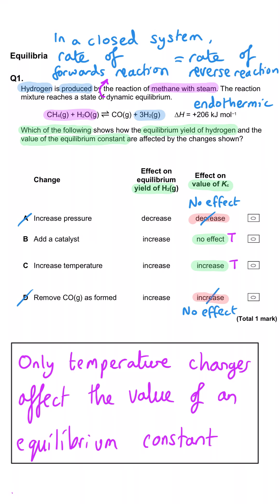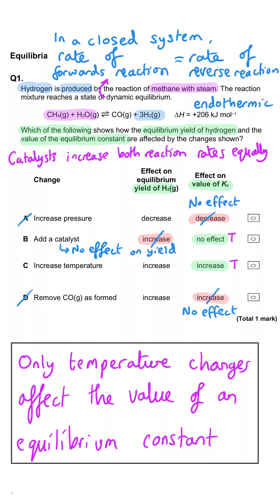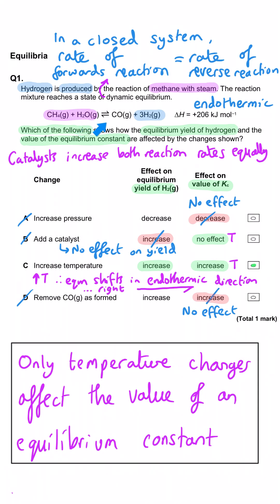So we're now deciding between B and C. If we look at the yield, B says adding a catalyst will increase the yield of hydrogen — that's not true. It will increase the rate of the forward reaction, but it will also increase the rate of the reverse reaction, so those effects cancel out and the yield won't change. So B must be wrong and C must be correct. Increasing the temperature shifts the equilibrium in the endothermic direction — which is forward — increasing the yield of hydrogen. So C is correct.